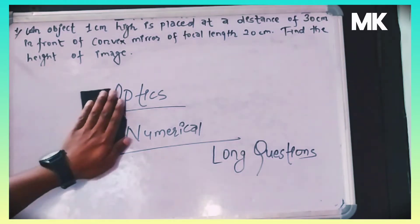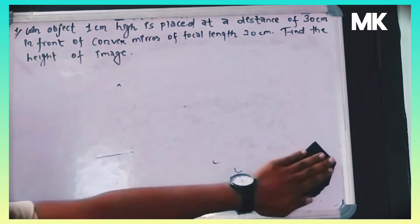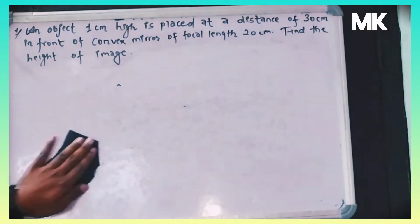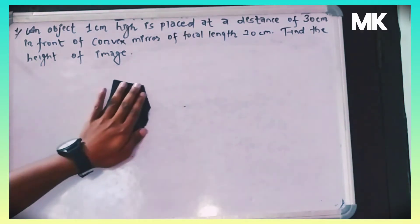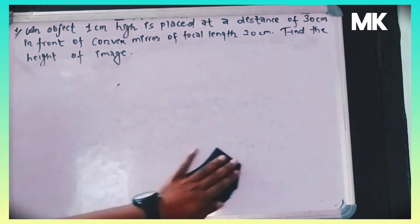An object 1 cm high is placed at a distance of 30 cm in front of a convex mirror of focal length 20 cm.